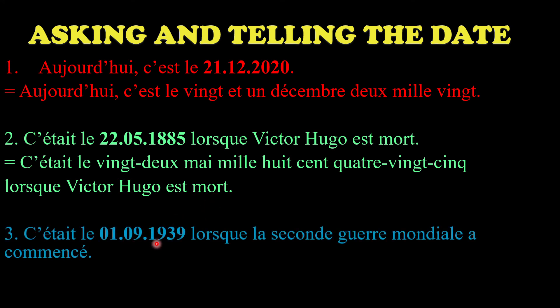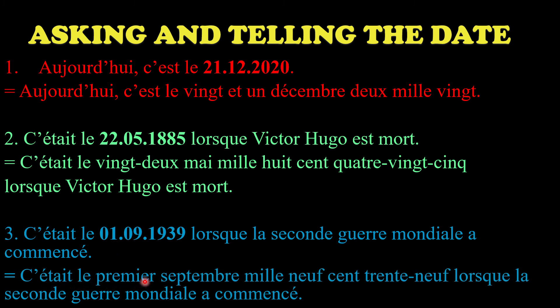The last example: 'c'était le 1er septembre 1939' - the Second World War started. Remember, for the number one in a date you always say 'premier' not 'un', so 'c'était le premier septembre.' Then the year: 1000 is 'mille', 900 is 'neuf cent', and the last two digits 39 is 'trente-neuf.' Once you know how to write the years it becomes easy to tell the date. As a final reminder: for months, never capitalize the first letter. I hope this lesson has made telling the date and reading years in French easier for you. Thank you!